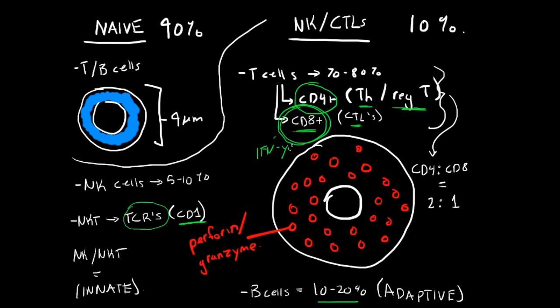Now B cells, they're from the acquired immunity, so adaptive immunity. They form and mature in the bone marrow, and they express membrane bound immunoglobulin on their cells. They produce and secrete antibody, and they function as an antigen presenting cell in secondary immune responses.